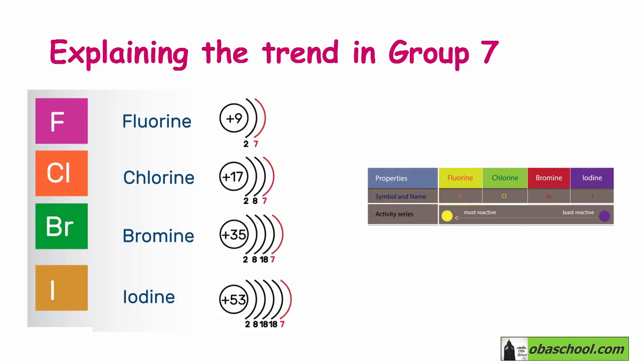So this is why as we move down Group 7, reactivity decreases. Fluorine is the most reactive halogen and iodine is the least reactive halogen.